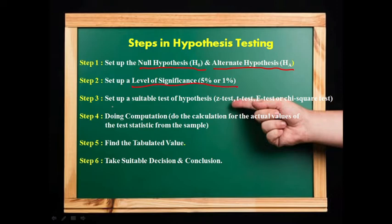In Step 3, we set up a suitable test of hypothesis. We decide which test to apply — whether it is Z-test, T-test, F-test, or Chi-square test.